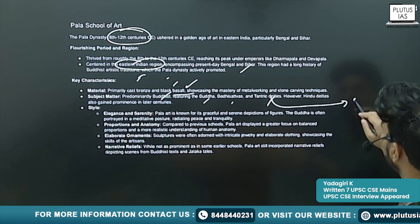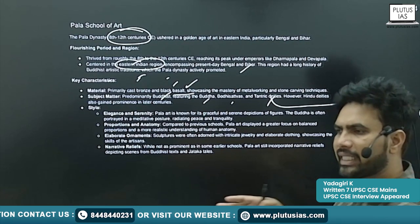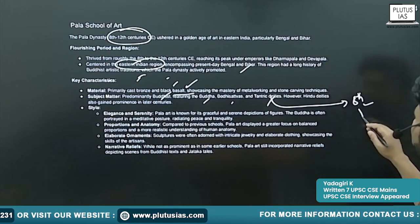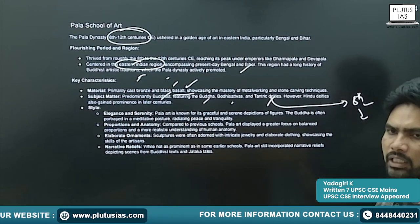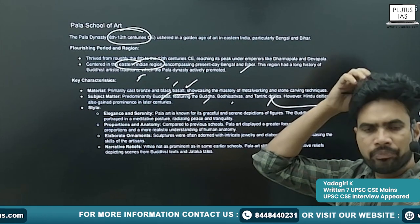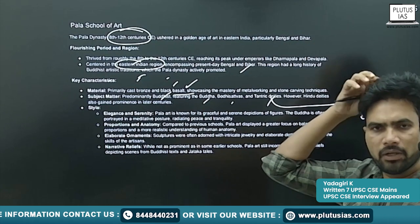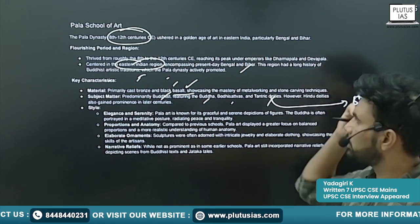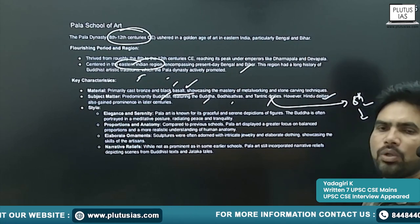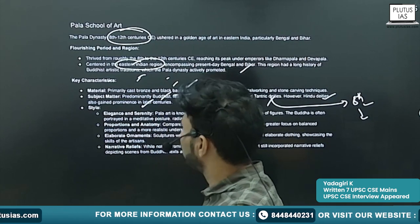By the medieval time, many sects in Buddhism had developed. Tantrism also developed in Buddhism — mostly practiced now in present-day Tibet. It was popular in the Bihar and Bengal regions also during that medieval time.